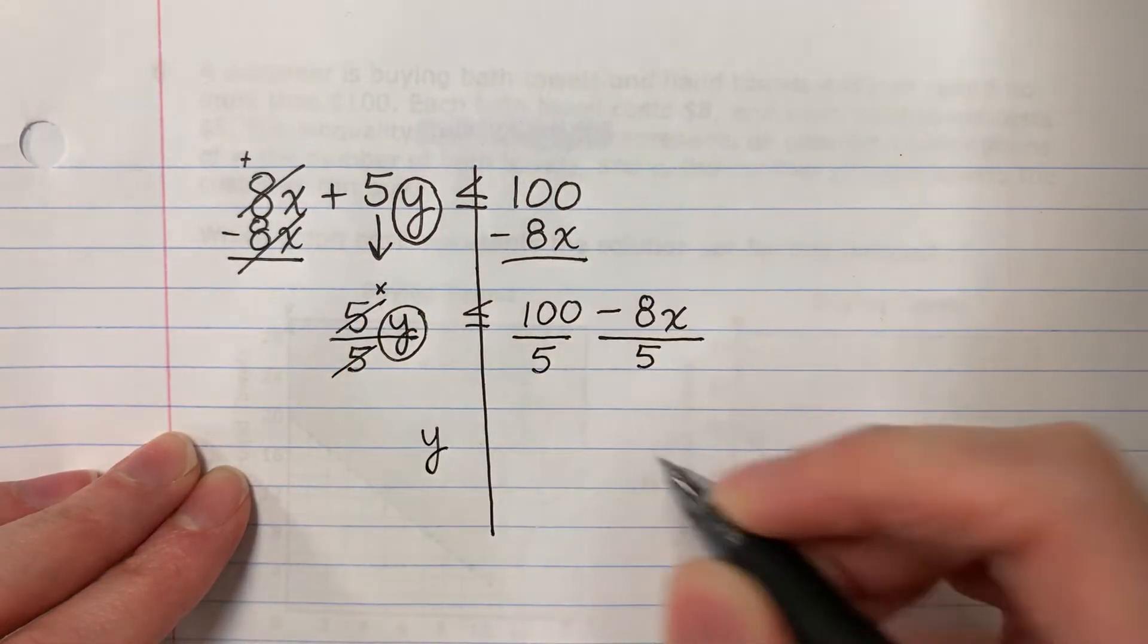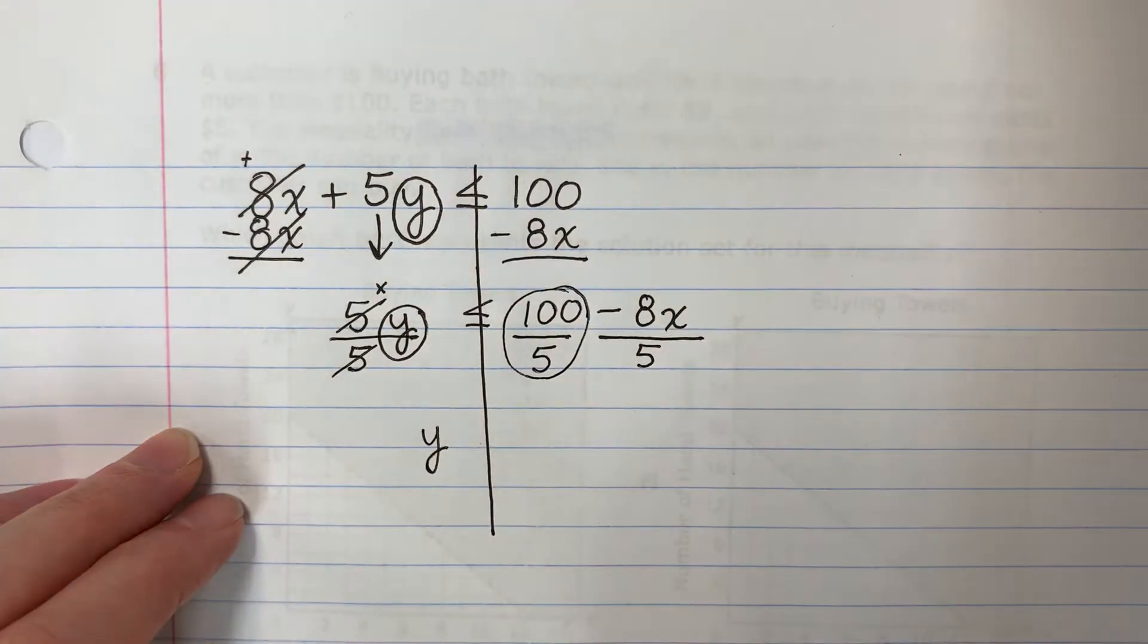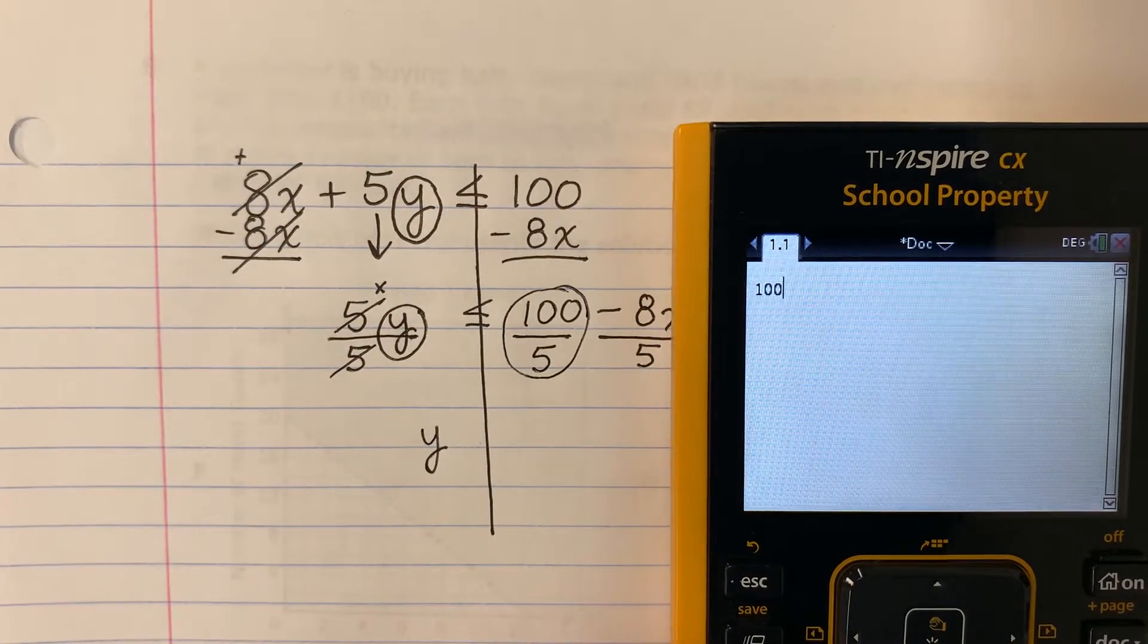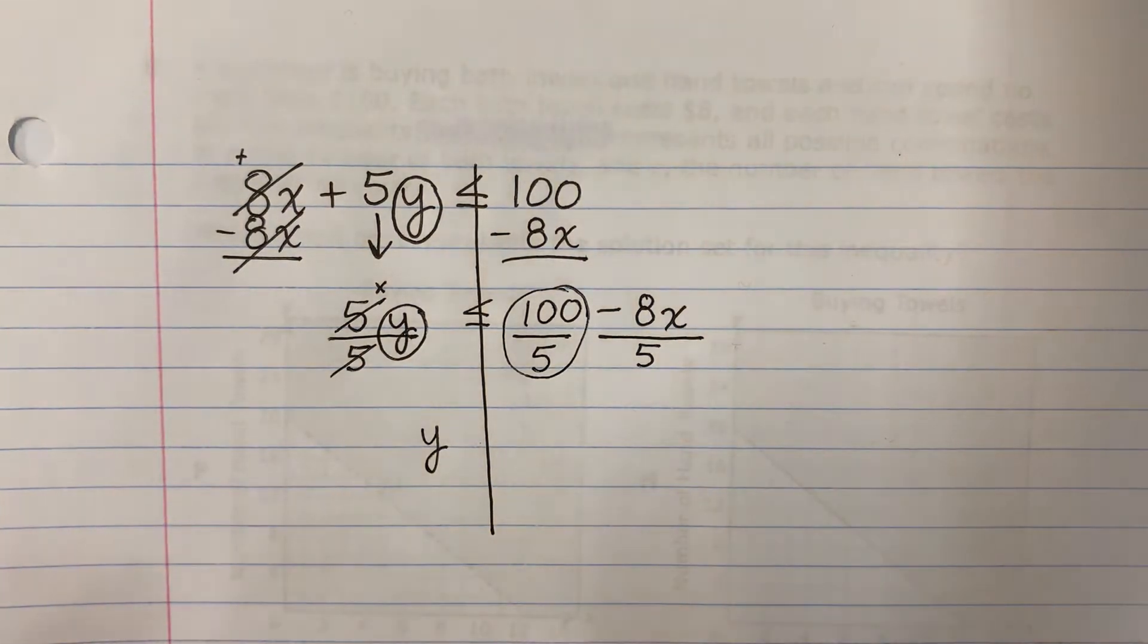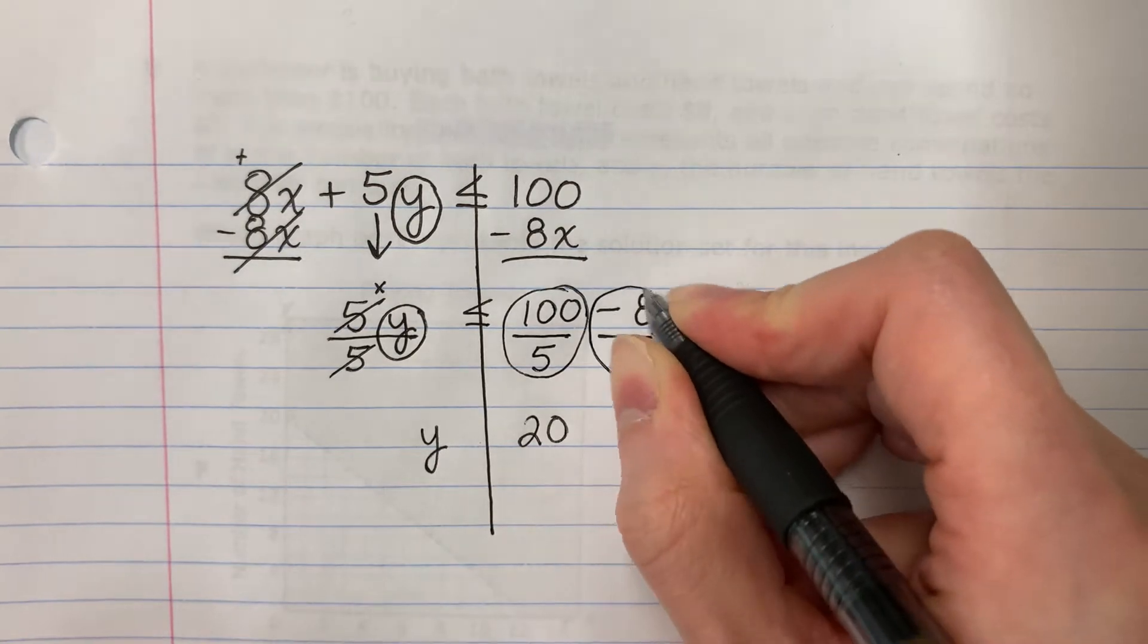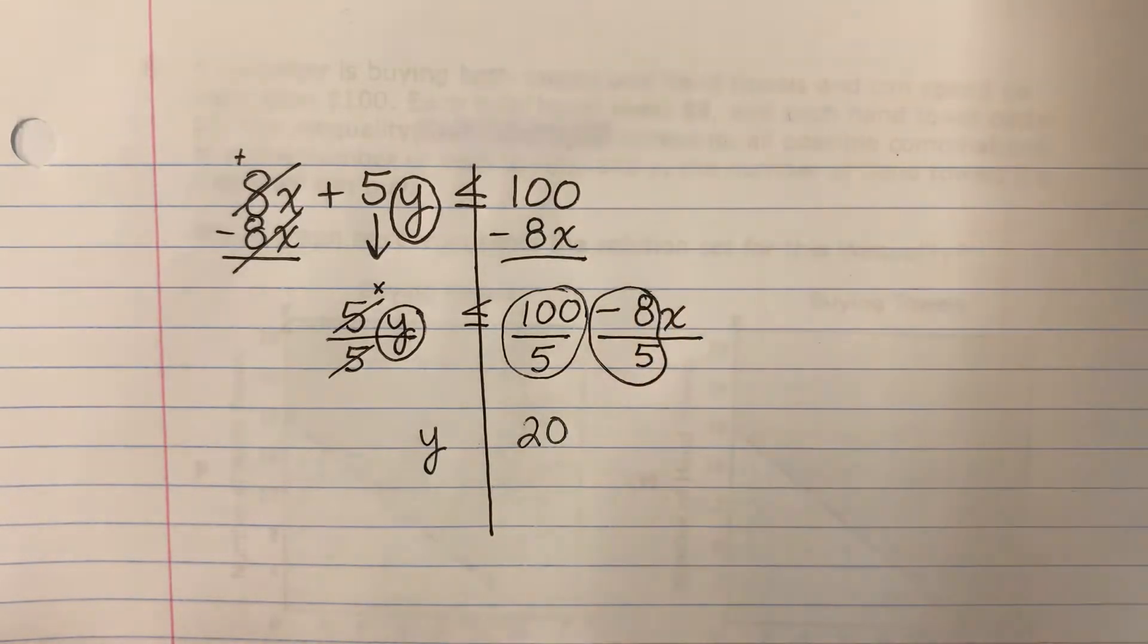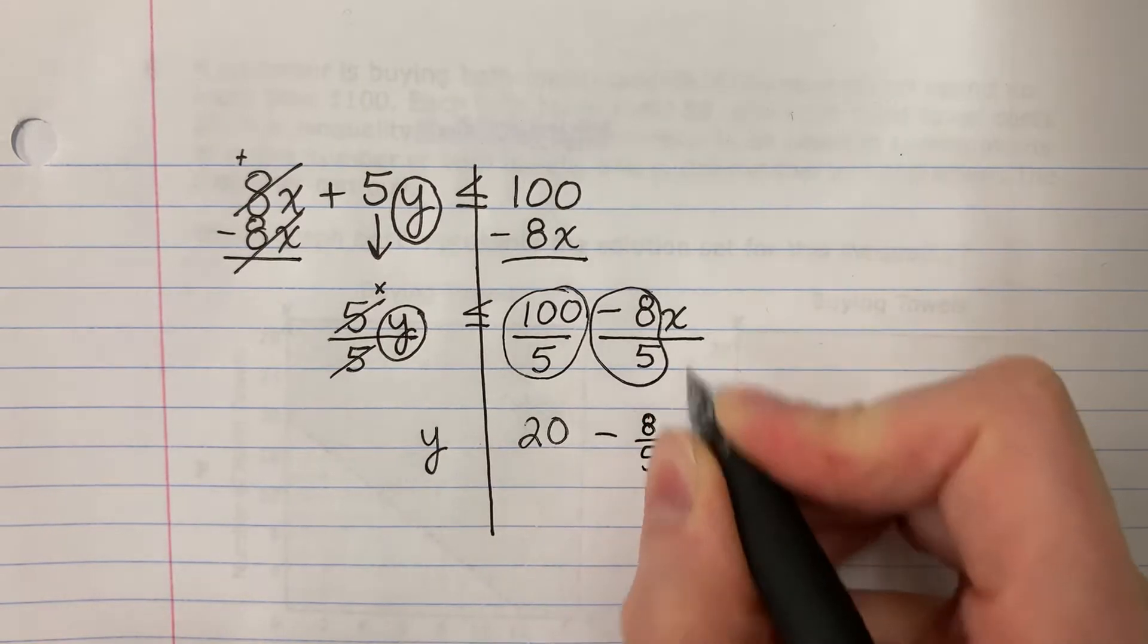100 divided by 5. Let's go ahead and put that in the calculator. 100 divided by 5. That is going to be 20. And then negative 8 divided by 5. Negativo 8 entre 5. It's the same. Negative 8 divided by 5. x.